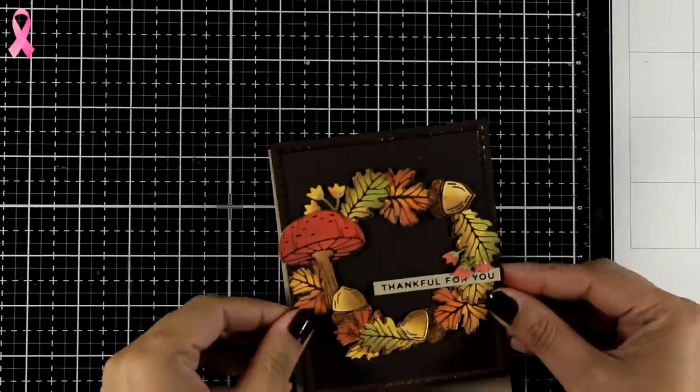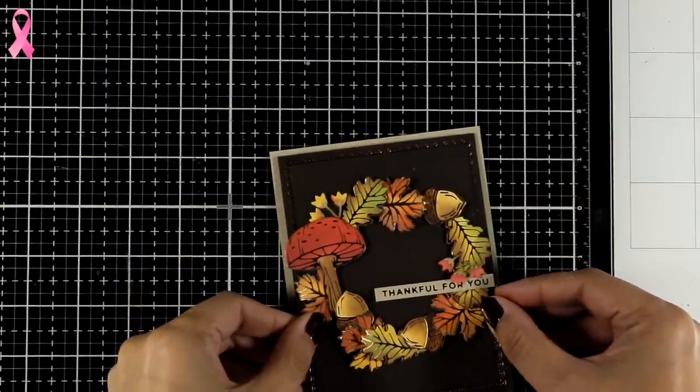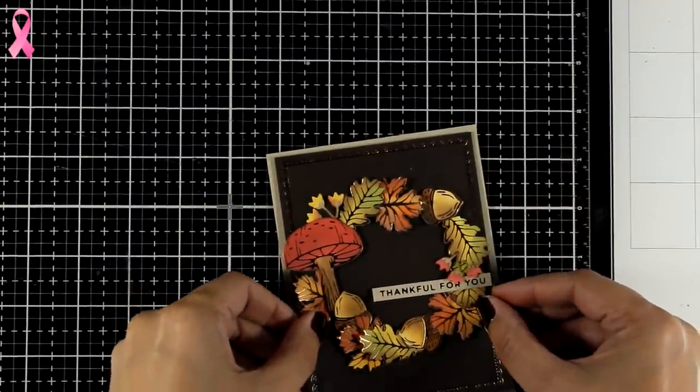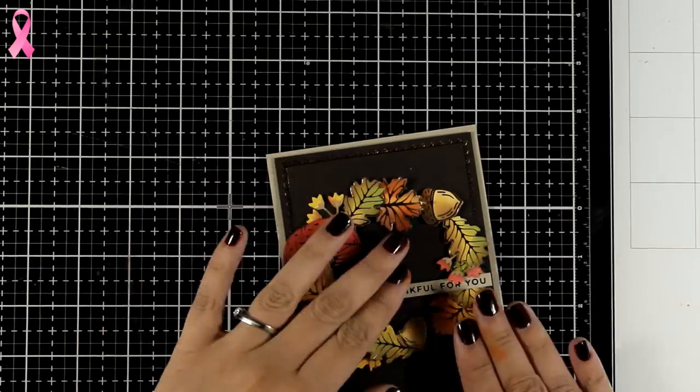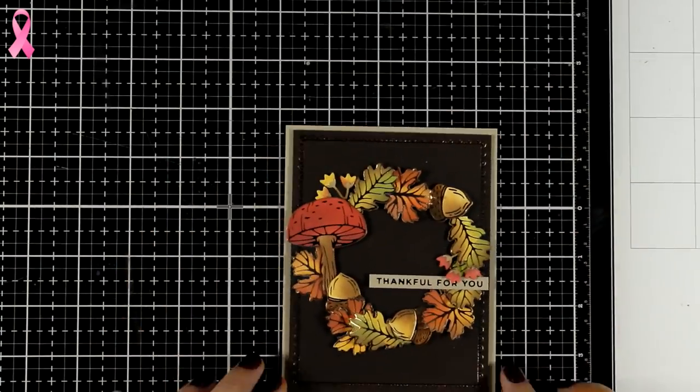At the back of the brown panel I did use foam tape. I'm going to stick it on top of a card base that is 4 and a quarter by 5 and a half in craft color. It matches the color of the sentiment.